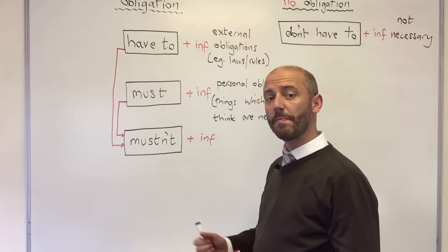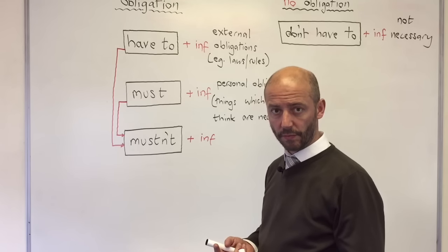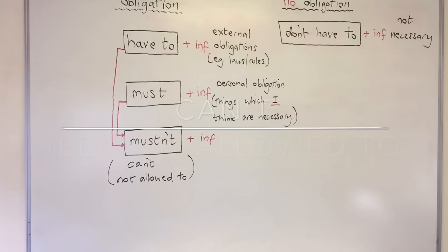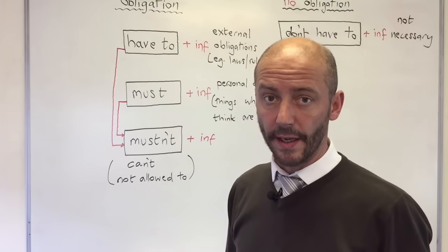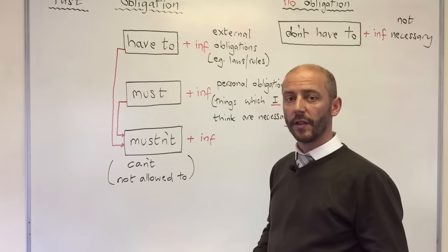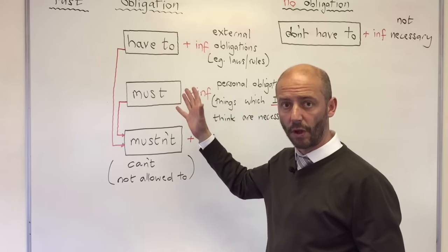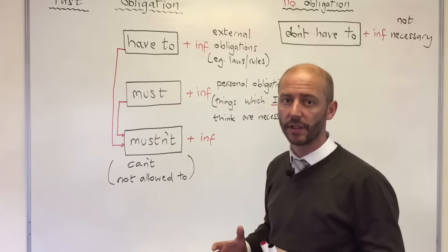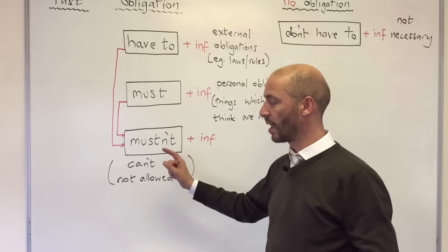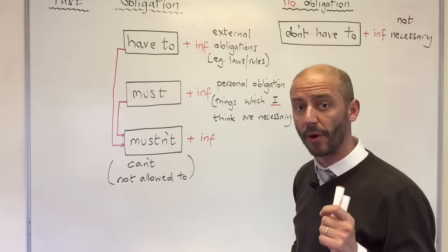With mustn't, we can also use can't and not allowed to. For example: you can't smoke in here; you're not allowed to smoke in here; you mustn't smoke in here. So we use have to to talk about external general obligations, must for more personal obligations, and mustn't, can't or not allowed to for things we can't do — things which are prohibited.